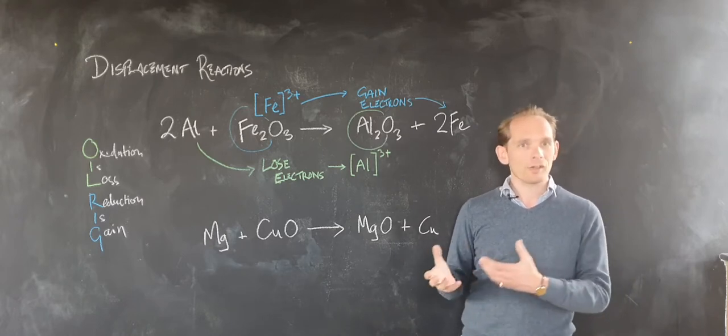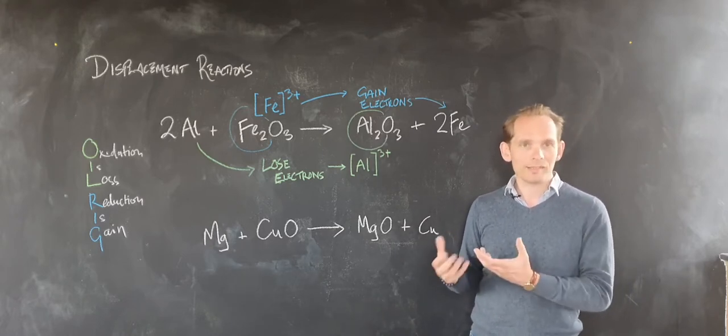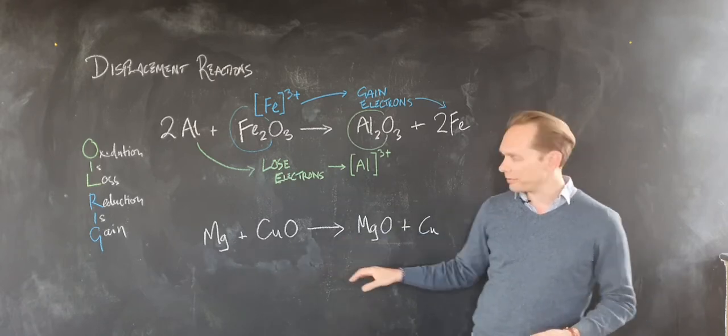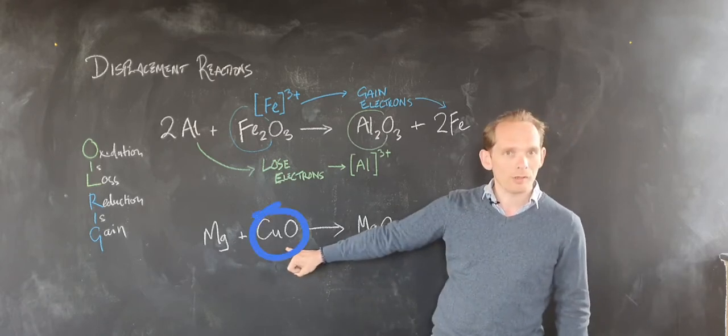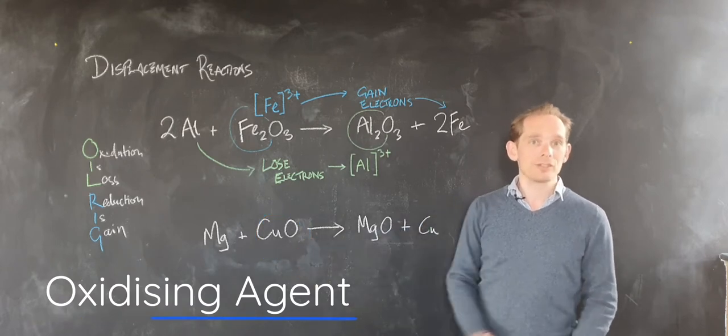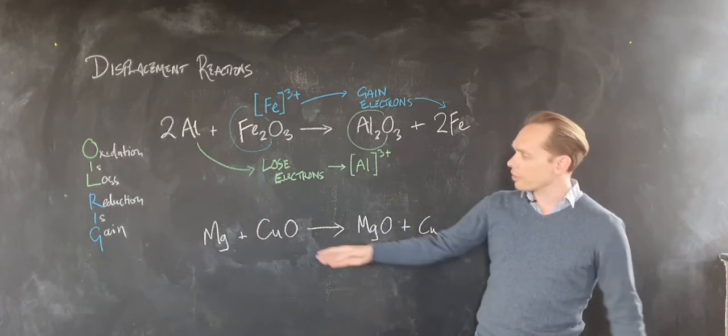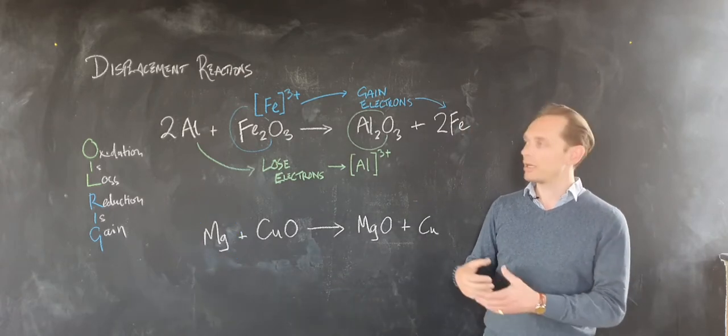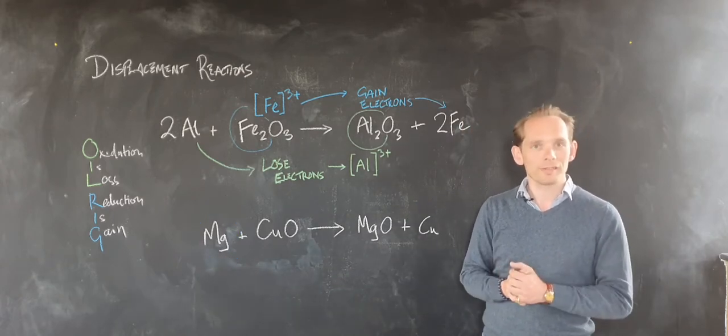The last thing to talk about is oxidizing and reducing agents. Well that's the same kind of thinking. If the magnesium is being oxidized you can say the copper oxide is an oxidizing agent in this reaction. If the copper oxide is being reduced the magnesium is a reducing agent. I hope that makes sense and thanks for watching.